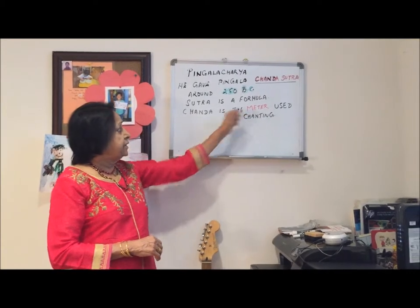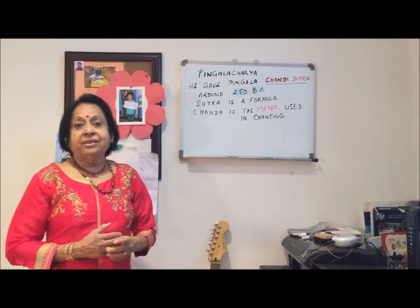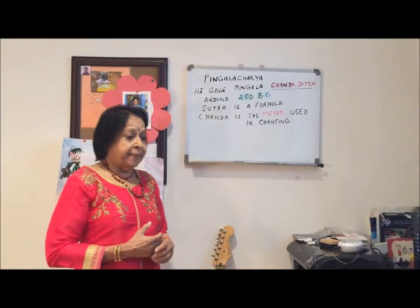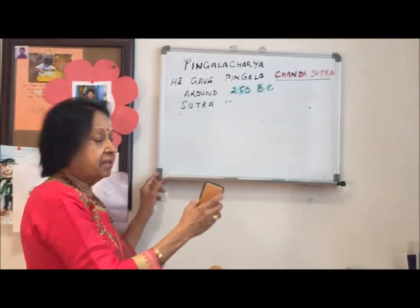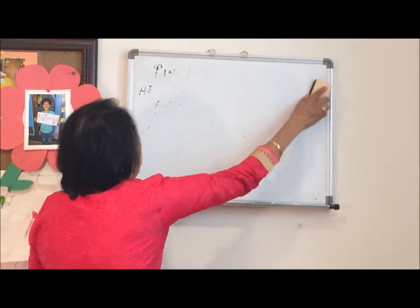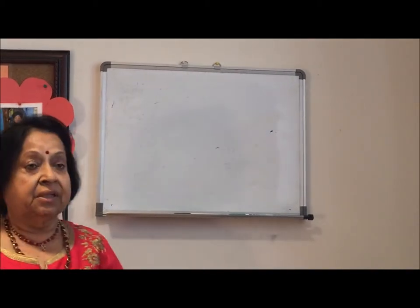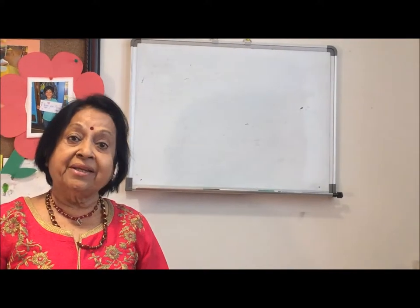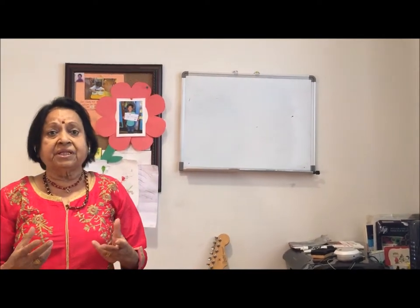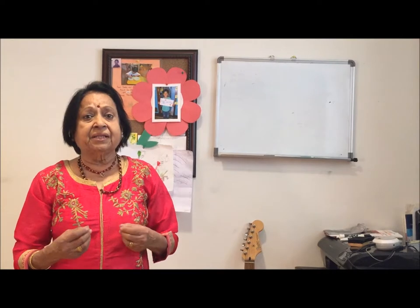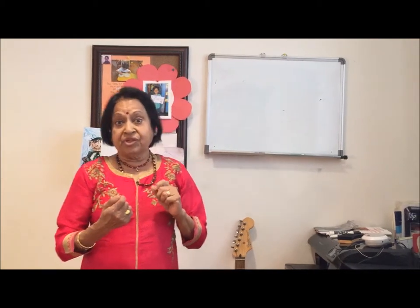Chanda is the meter used in chanting. This meter is entirely different from the regular meter used for measuring length or height. It is the chanting done in the Vedas or in Sanskrit Shlokas. For example, this is one way of chanting the Bhagavad Gita, and there is one more way of chanting — a different meter.